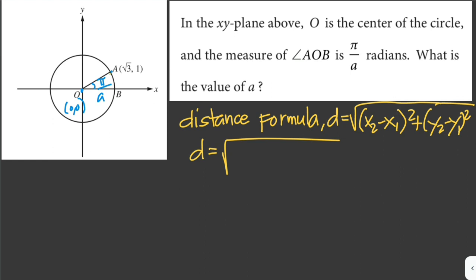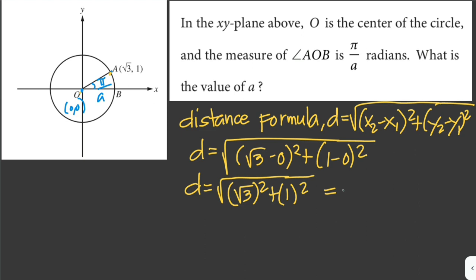Using the points here, point A and point O, that would be the square root of (√3 - 0)² plus (1 - 0)². So this is just equivalent to square root of (√3)² plus 1², which is just equal to square root of 3 plus 1.